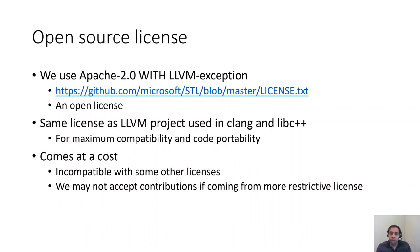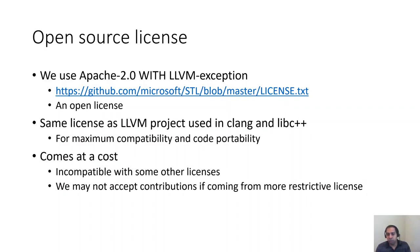I'd like to take a minute to talk about the license we have in our GitHub repo. The license we have chosen is Apache version 2 with LLVM exceptions — the same one used by LLVM. We chose this license for several reasons including its openness, so we won't limit our ability to port code to and from other open source repos such as libc++. However, this comes at a cost: the open license prevents us from accepting code provided under less open licenses such as copyleft ones.